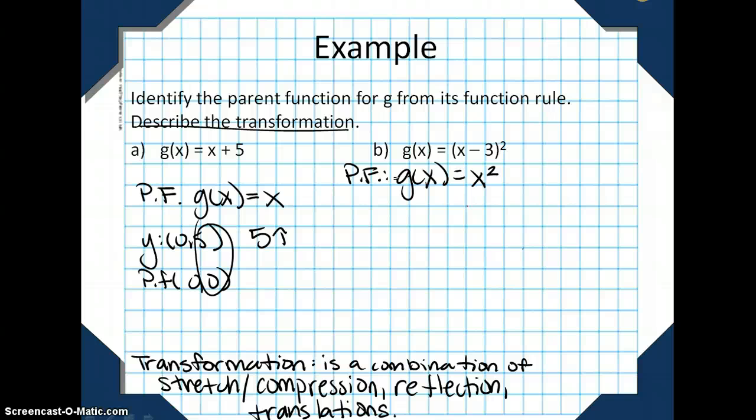So, g of x is equal to negative x squared would be a reflection. g of x is equal to 2x squared would be a stretch. So, those are specific.